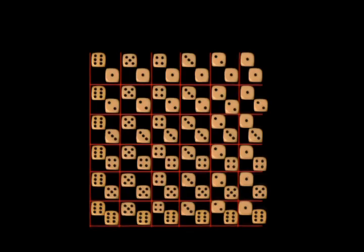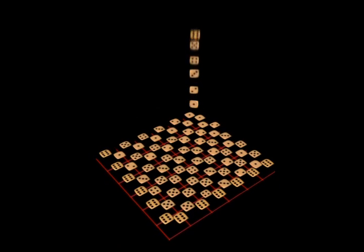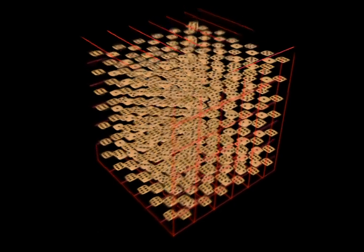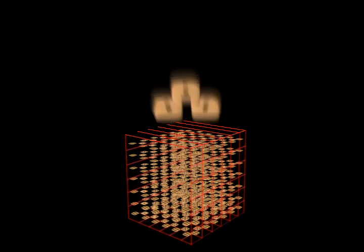First, we figure out the size of the sample space. For three dice, this is six times six times six, or 216. And there is only one way to roll three ones, so the probability is one divided by 216.